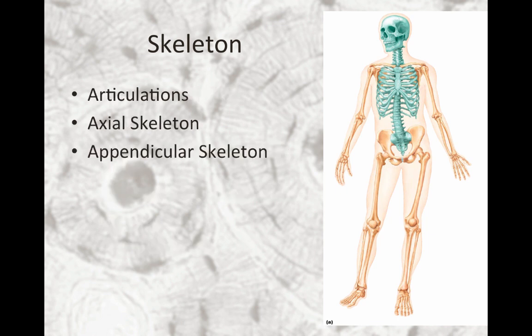There are 206 bones in the adult skeleton, and the bones are connected to joints or articulations. The skeleton can be further divided into the axial skeleton — those are bones around the axis or center of gravity of the body, highlighted in green in the diagram on the right — and the appendicular skeleton, highlighted in brown, which are the bones of the limbs or appendages. We'll talk more about the appendicular skeleton in next week's lab.